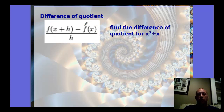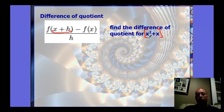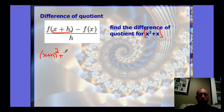Here is the difference quotient. Let's find the difference quotient for this expression. The substitution occurs: f of x plus h means we put x plus h in for x in the function. So we put x plus h in for both x's — x plus h squared plus x plus h.